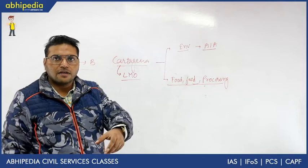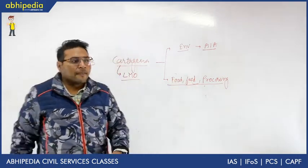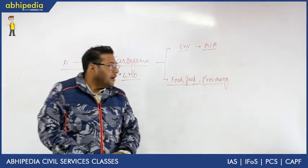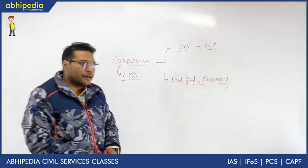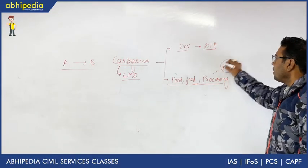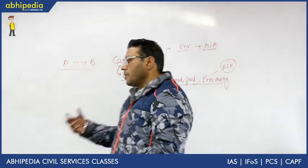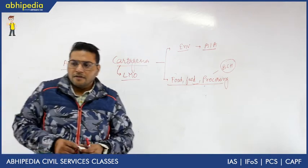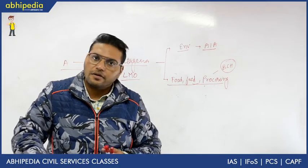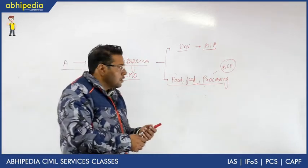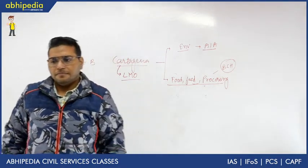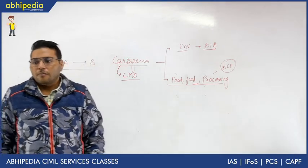This is the procedure, advanced informed agreement, where we use that particular organism directly in environment. Okay, we have a fish, directly use in river. The second procedure is for food, feed, and processing.